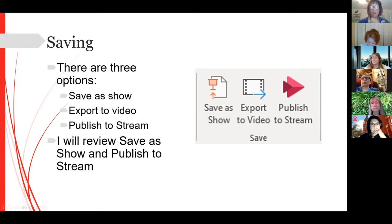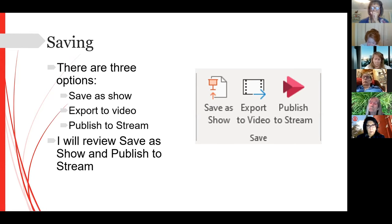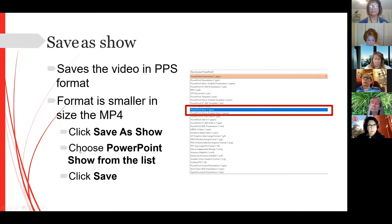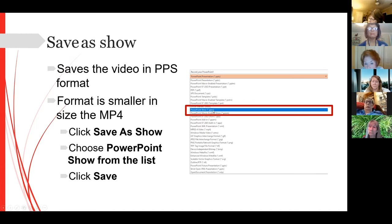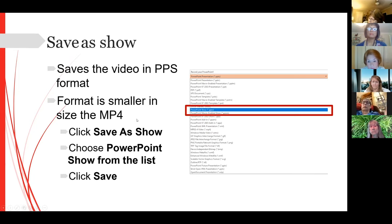Publishing to Stream is very simple — all you do is click that button. To save as a show, you go File > Save As and choose PowerPoint Show from the dropdown list, which saves your show. That format is 90% smaller than an MP4.